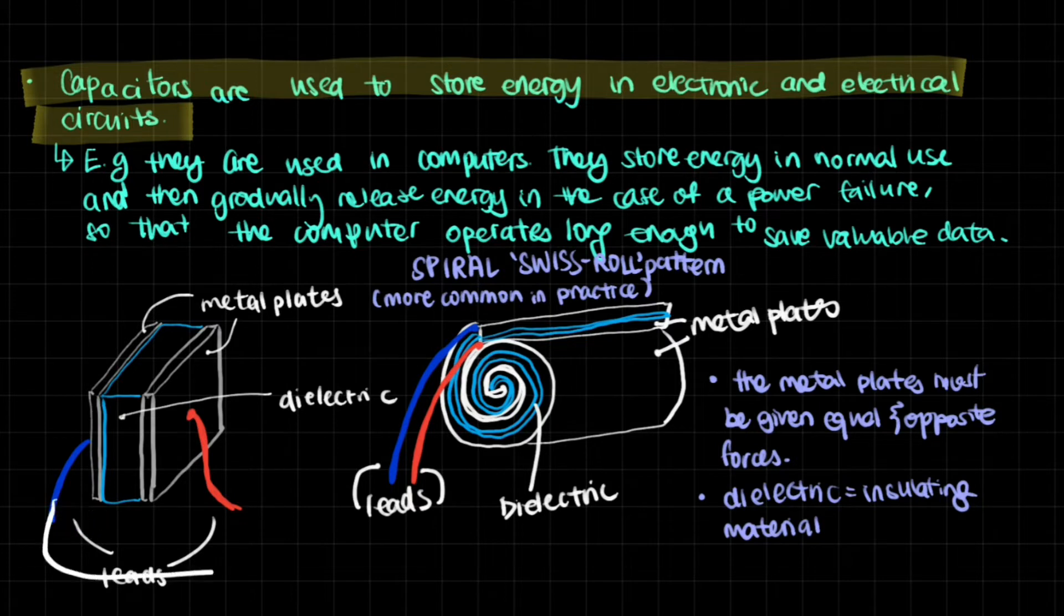This leads to a positive terminal. This leads to a negative and it's like that. So basically what the power supply does is the metal plates have equal and opposite forces as a result of the cell giving it that. And then they are separated by a dielectric. And what a dielectric is, it's an insulating material.